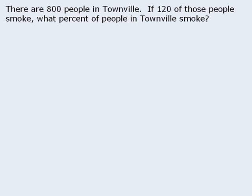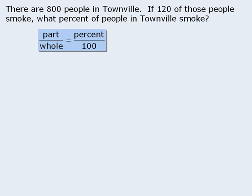One way to do this is to apply the following rule that says the part divided by the whole is equal to the percent divided by 100.